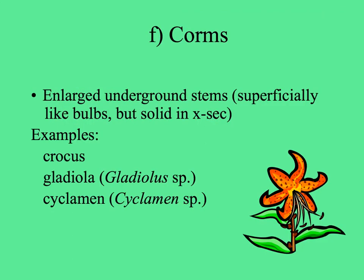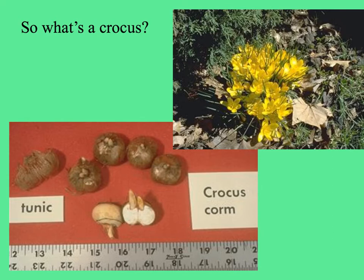Similar in appearance to a bulb from the outside, but different in cross-section, is a corm — it's just a bulb-shaped solid piece of stem, like you would find in cyclamens, gladiolas, or crocuses. Crocuses are common flowers in temperate places, one of the first things to pop up in spring, and it's the crocus stamens that give the yellow color to one of the most expensive spices, saffron. Here are some crocus corms — the tunic is the brown cover, and in cross-section you can see they're solid, unlike an onion.